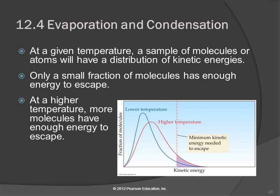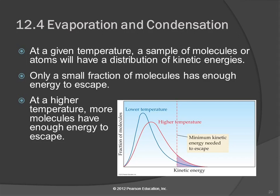There's a relationship between temperature and rate of evaporation. On a graph with fraction of molecules on the y-axis and kinetic energy on the x-axis, at low temperature the average kinetic energy is lower. There's a dashed line representing the minimum amount of energy needed to escape — to evaporate. The average speed of particles is not enough to break through, but the fastest ones can. Those are the ones that will evaporate.